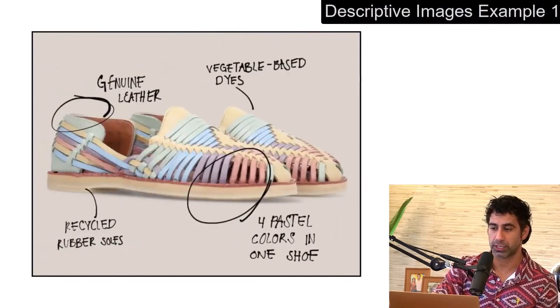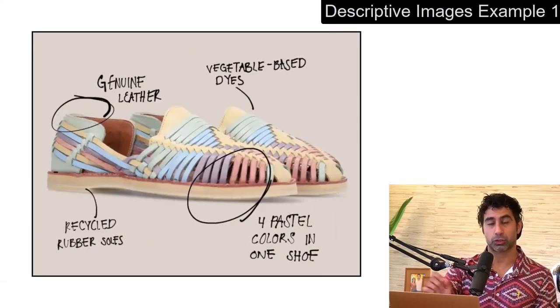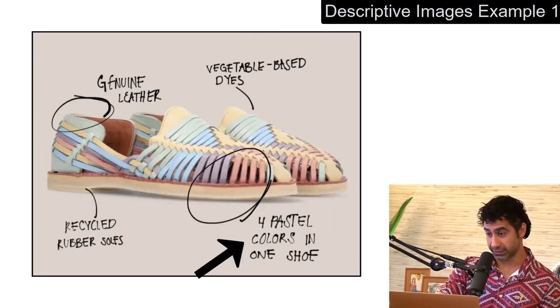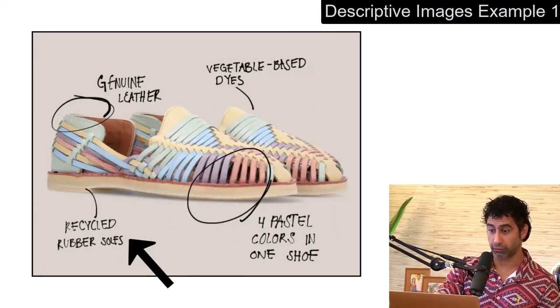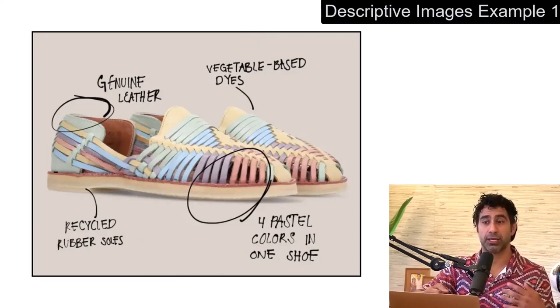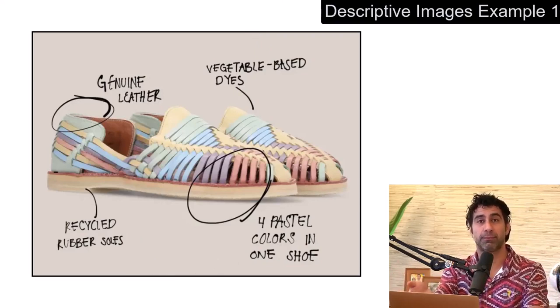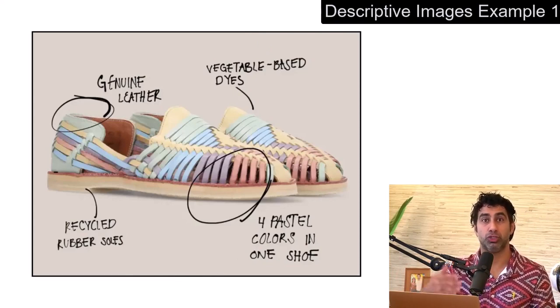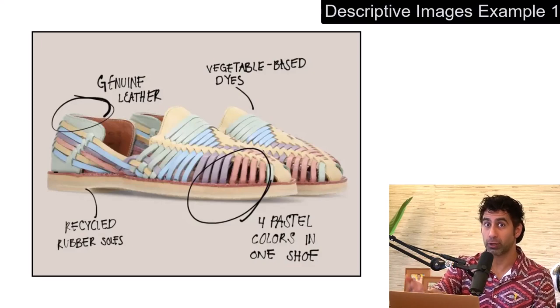Don't do this. Don't put a generic guy talking to generic people. Instead, what if we have descriptive images like this? Here is a shoe company and they circled with handwriting: genuine leather, vegetable based dyes, four pastel colors on one shoe, and recovered rubber soles. Without seeing a lot of copy, I basically understand a lot of aspects about this shoe just from this image. Imagine you just see this image alone — it can almost make a sale.